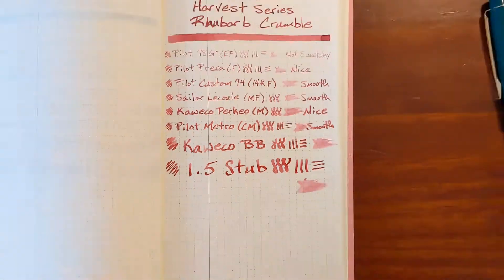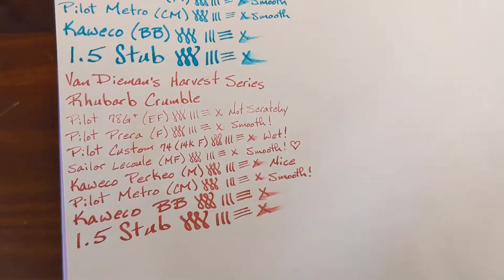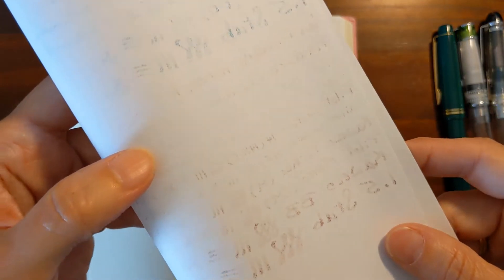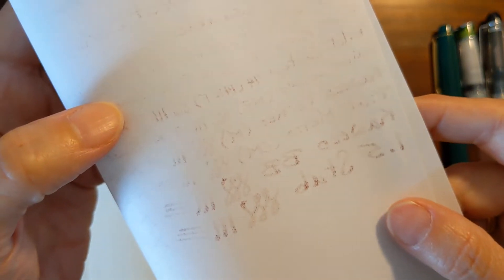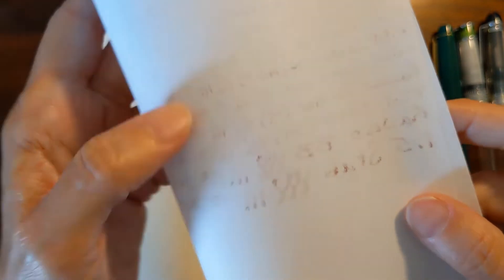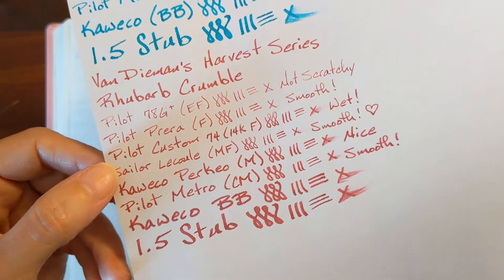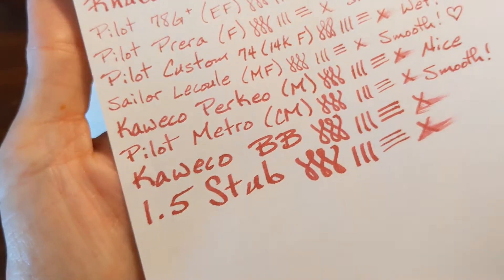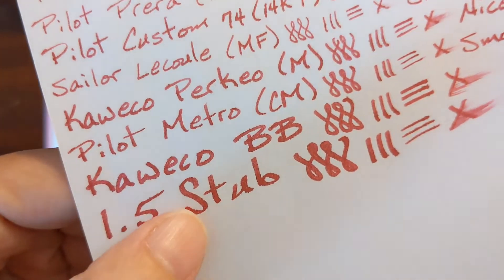While this writing sample dries, let's take a look at the writing sample on 20 pound copy paper. Most of the writing samples bled through all except for the extra fine and the Pilot fine nib. And I expected that from the amount of feathering I was getting. This was a fairly wet ink on the wider nibs. You can see the edges look kind of ragged.